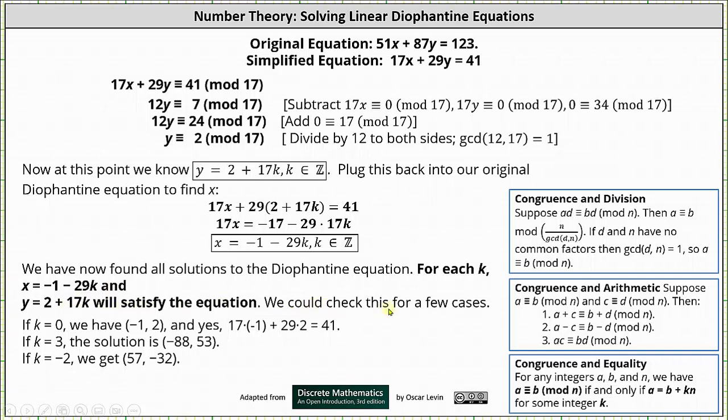If we want to, we can check a few of the cases. For example, when k = 0, we have x = -1 and y = 2. If we substitute these into the simplified equation, we have 17(-1) + 29(2) = 41. For a couple other cases: if k = 3, we have x = -88 and y = 53. And for k = -2, we have x = 57 and y = -32.